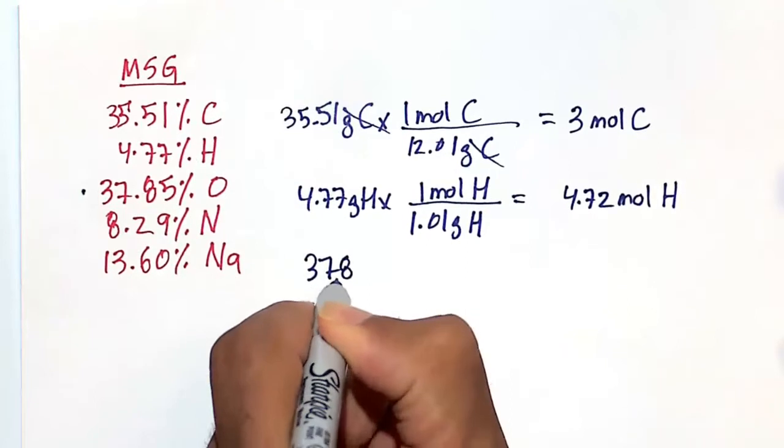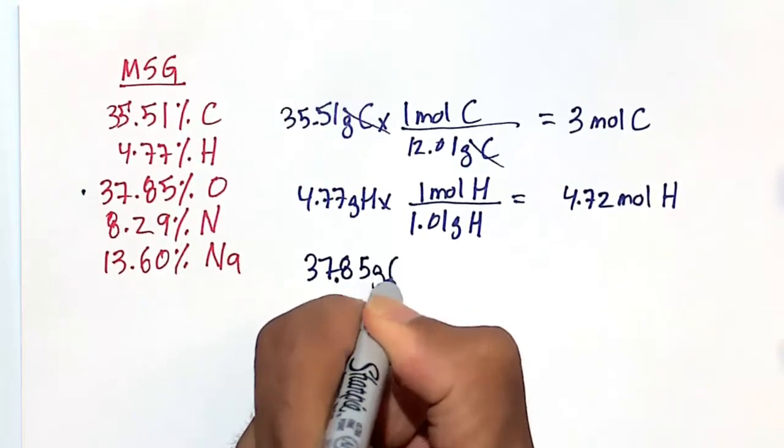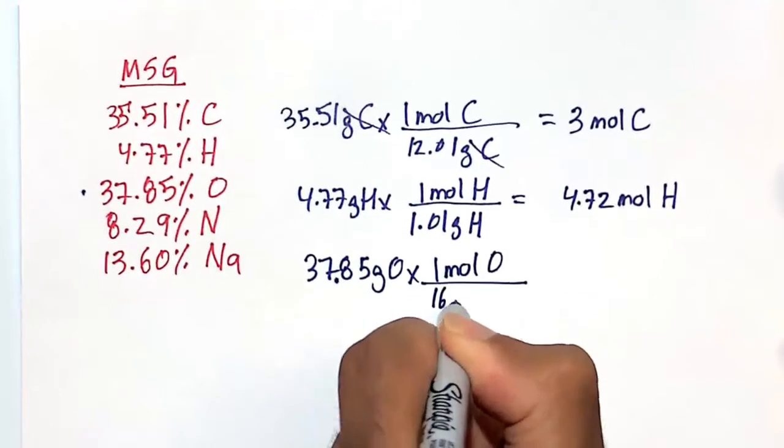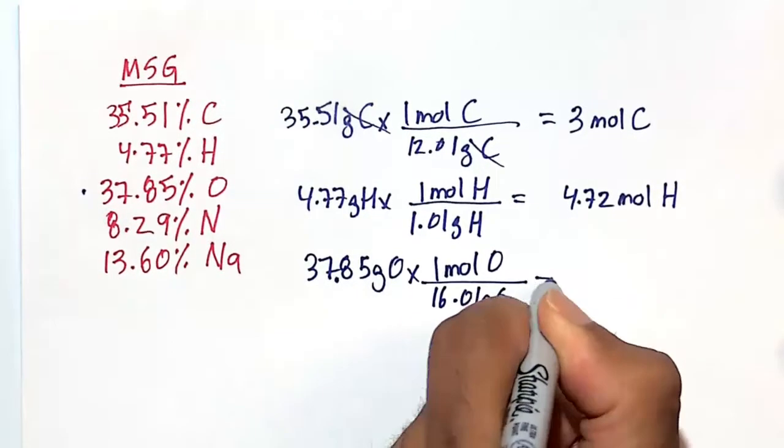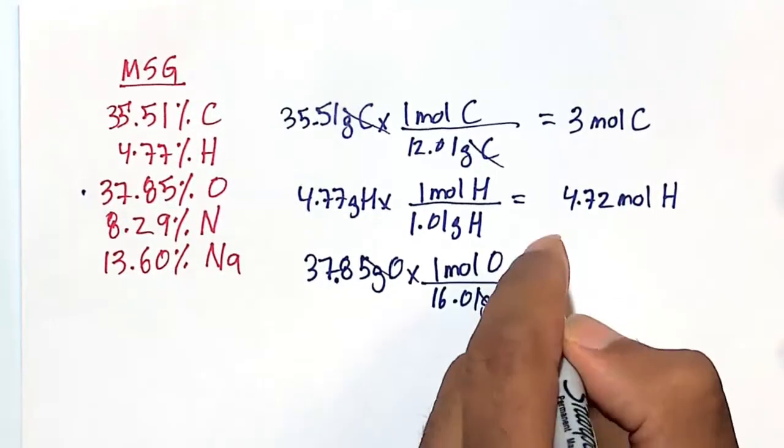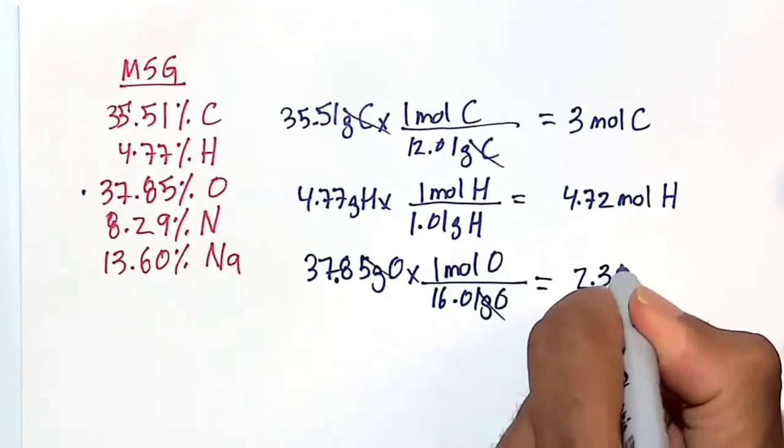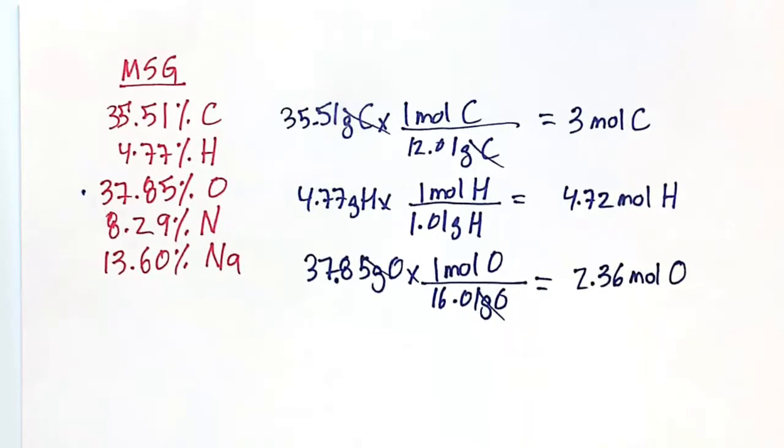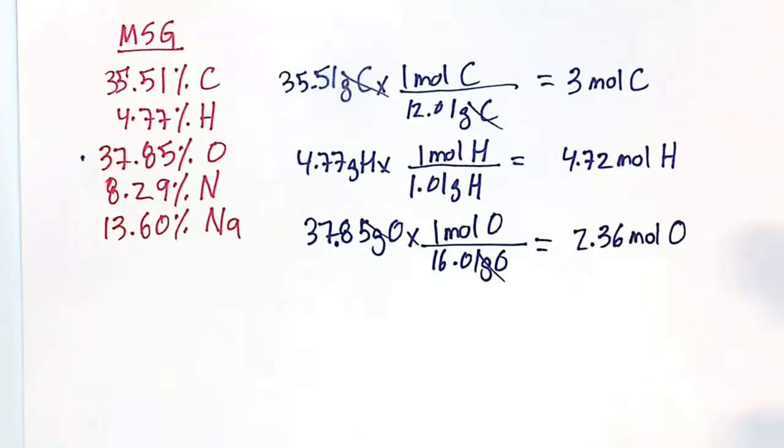37.85 grams of oxygen, we know that for every one mole of oxygen, there are 16.01 grams of oxygen. The grams cancel, this is not another clean number, it's not clean, 2.36 moles of oxygen. Continuing on.